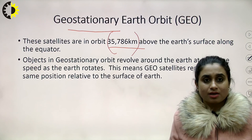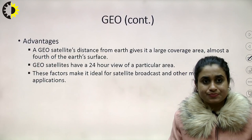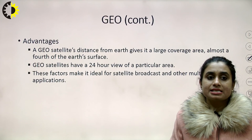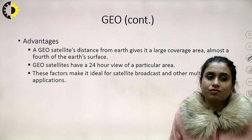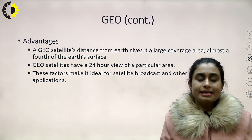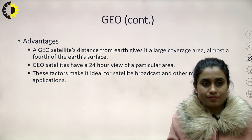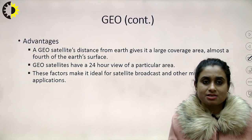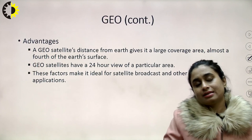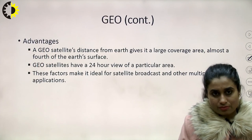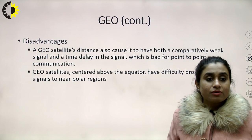A geostationary satellite's distance from Earth gives it a large coverage area — almost a fourth of the Earth's surface. Ideally, three geostationary satellites can provide worldwide coverage, though practically we have more satellites in that belt. A disadvantage is that, being so far away, signals will be comparatively weak.